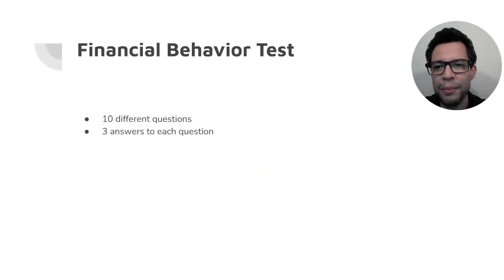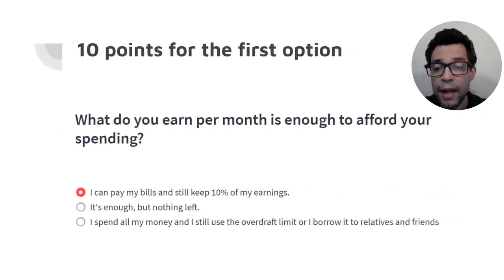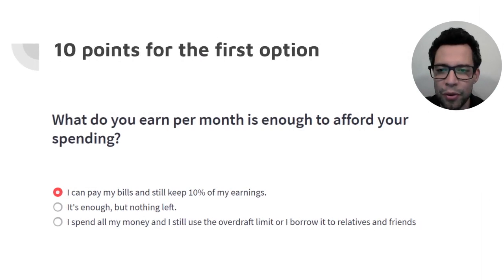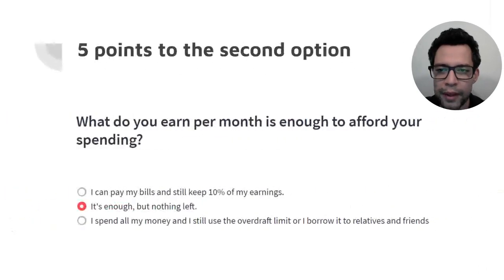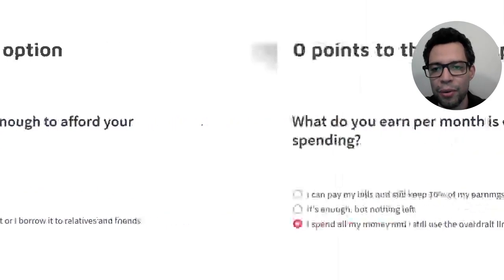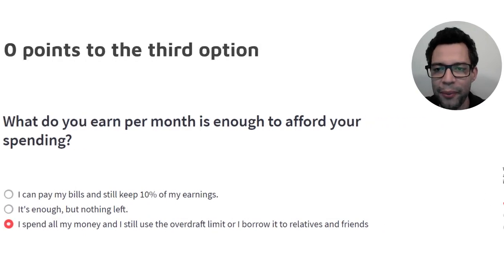The Financial Behavior Test has 10 different questions with three answers each. When the user selects the first option, it adds 10 points to the final score. When the user selects the second option, it adds 5 points to the final score. And the third option adds 0 points to the final score.